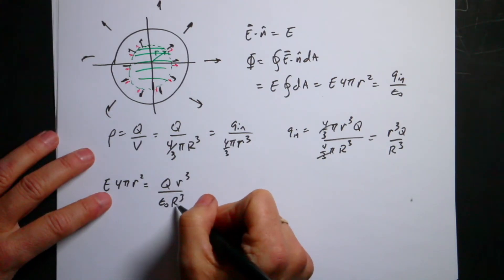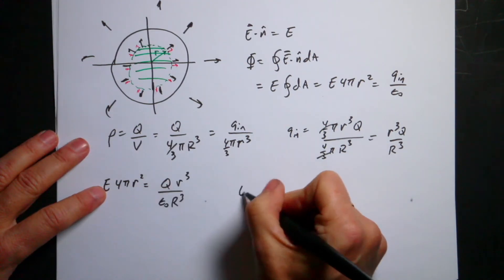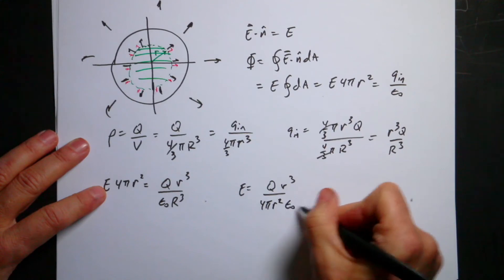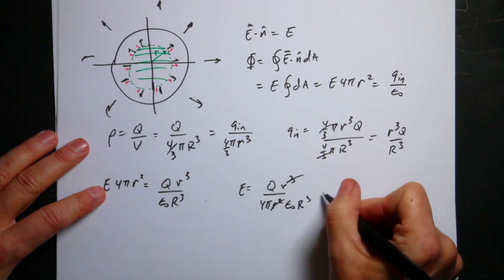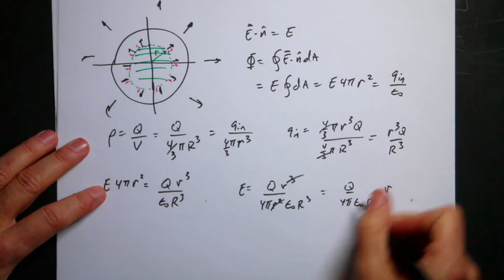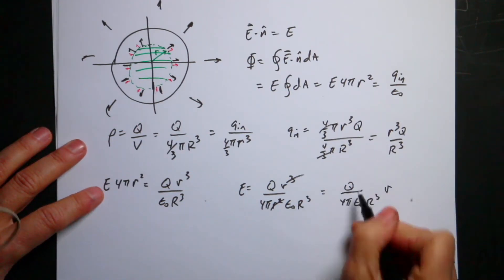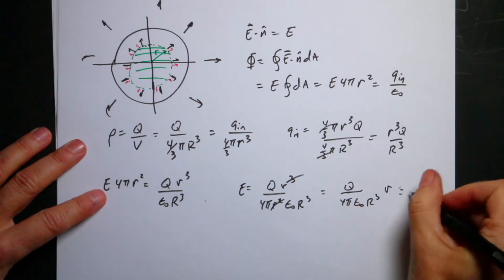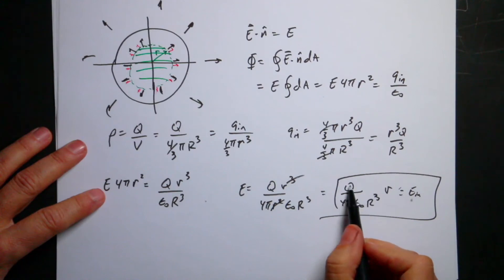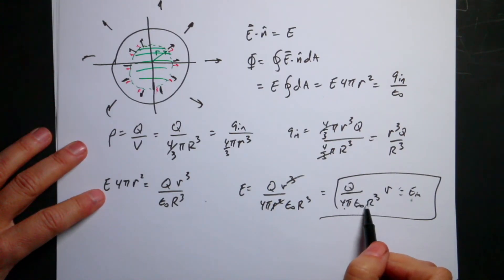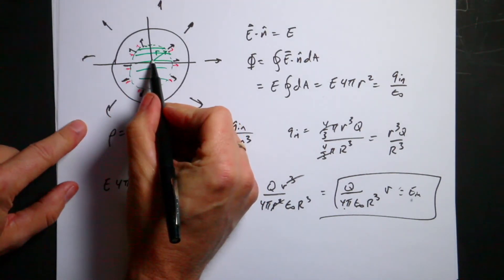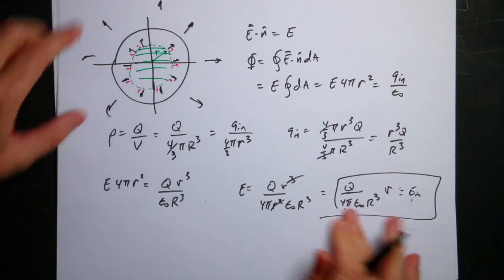Putting it all together: E times 4 pi r squared equals Q r cubed over epsilon naught R cubed. Solving for E gives E equals Q r cubed over (4 pi r squared epsilon naught R cubed), which simplifies to Q over (4 pi epsilon naught R cubed) times r. That's the electric field inside the sphere. We can verify: the units match those of the point-charge field, and at r equals 0, the electric field is zero — as expected at the center.